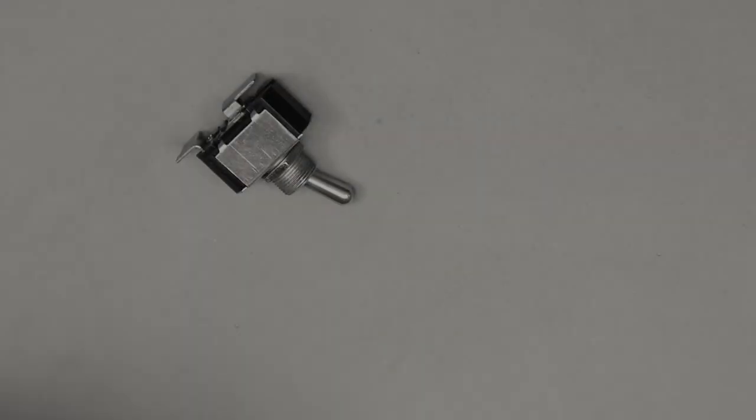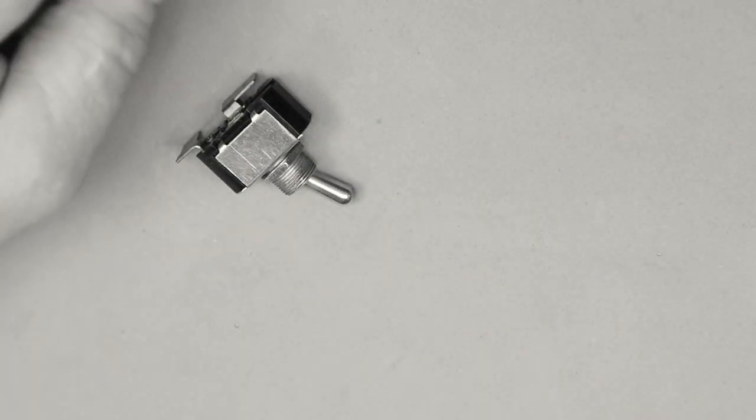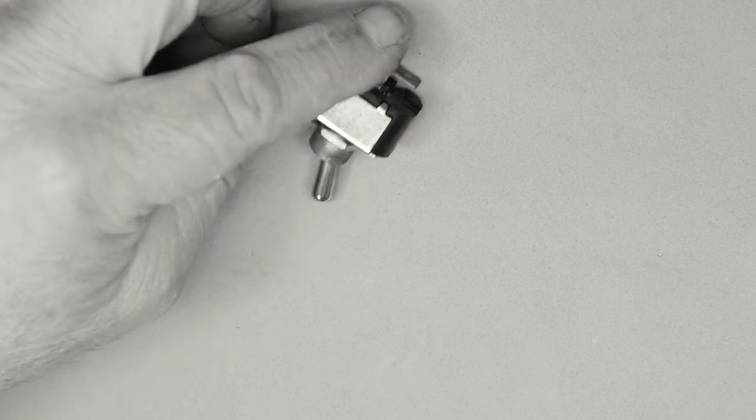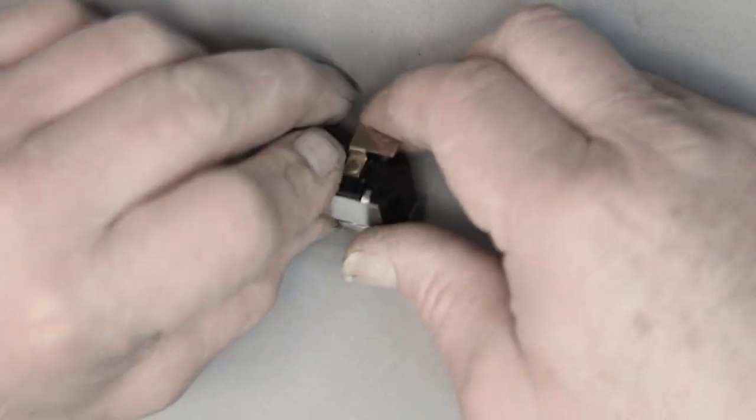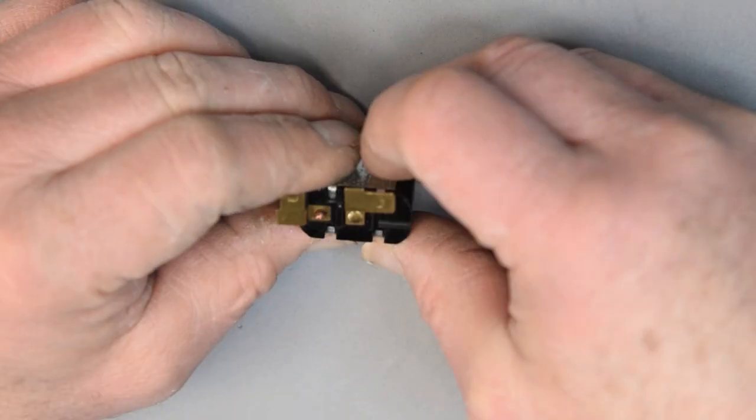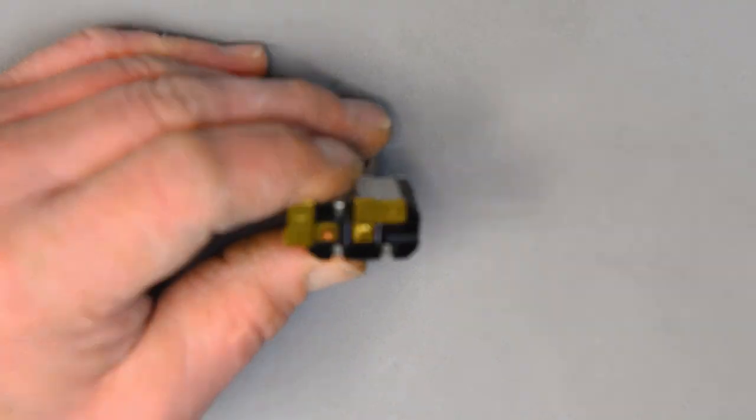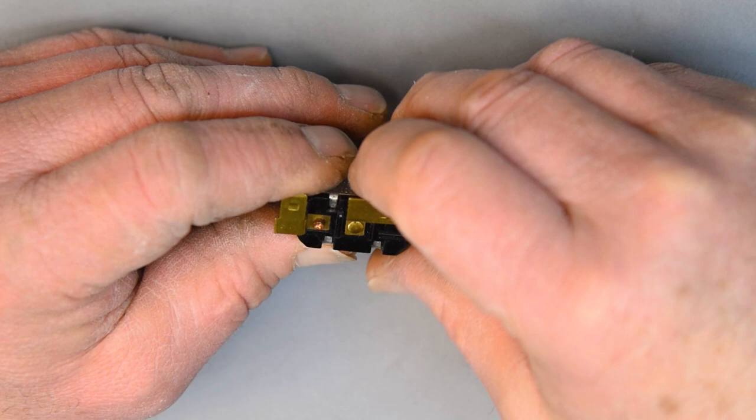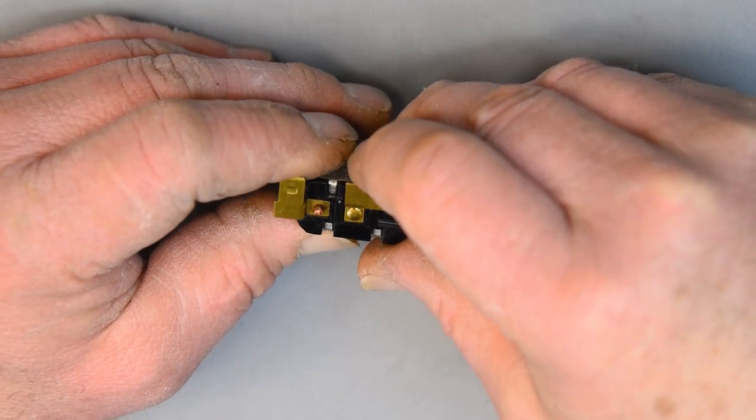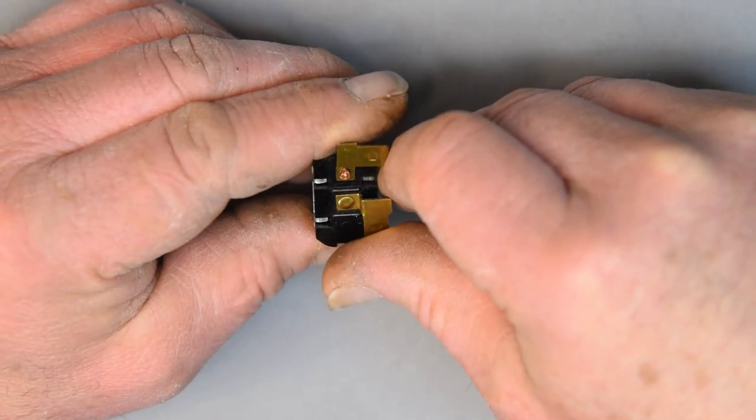What I have here is a toggle switch off the motor of a probably 60 or 70 year old Foley belt sander that I use almost every day. This switch failed in the on position and I'm going to try to repair it here if possible.